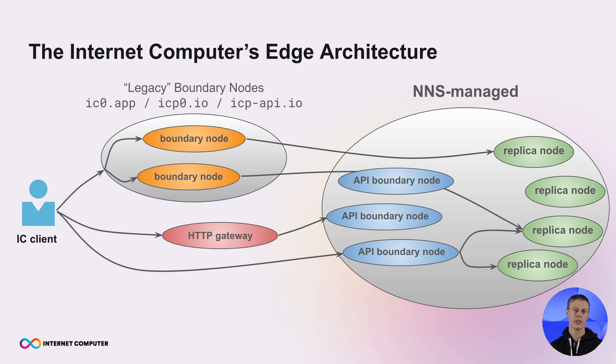The API Boundary Nodes and the HTTP Gateways. The API Boundary Nodes are operated by many different node providers and managed by the NNS. These API Boundary Nodes take API calls, so query, update calls, status calls, and route them to the right subnet and the right replica.